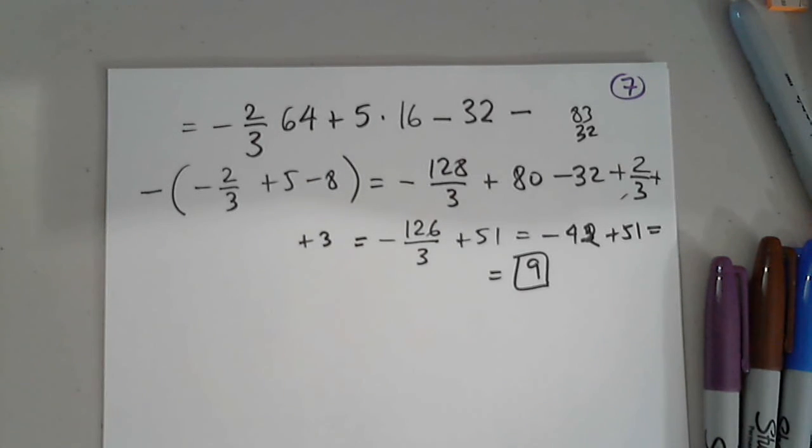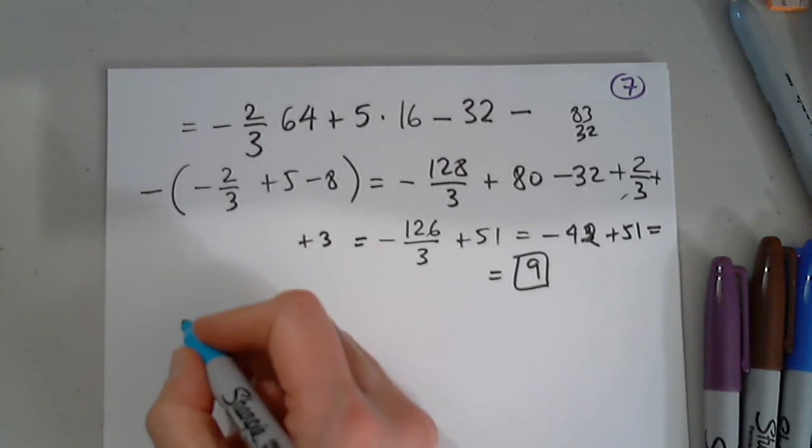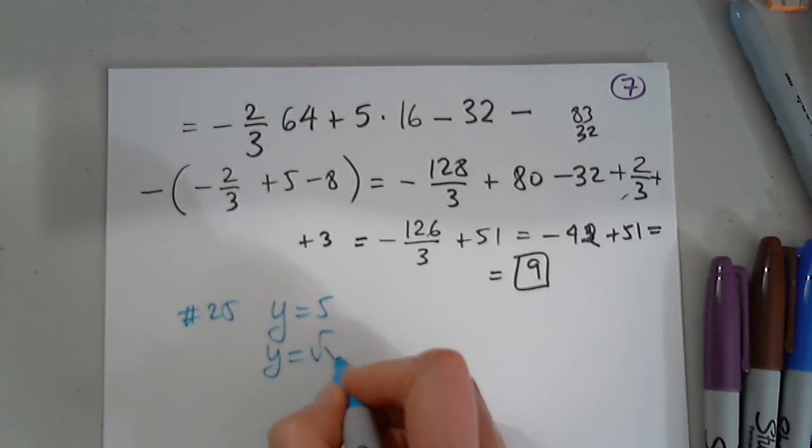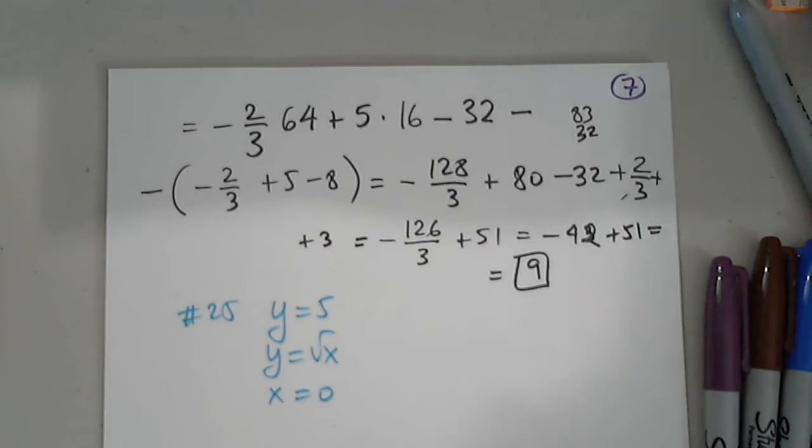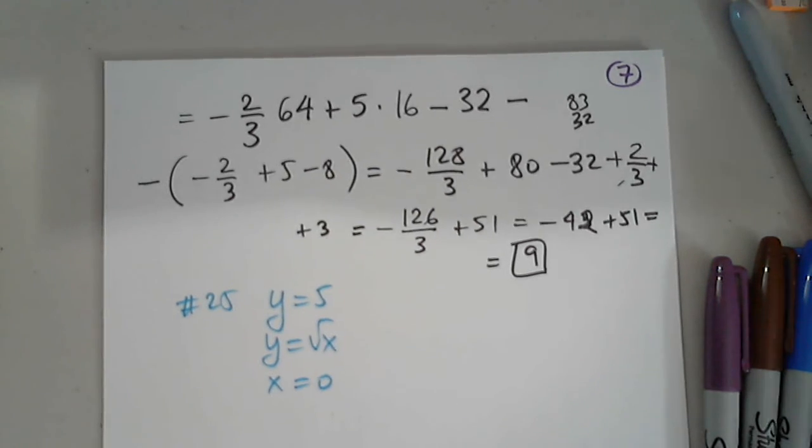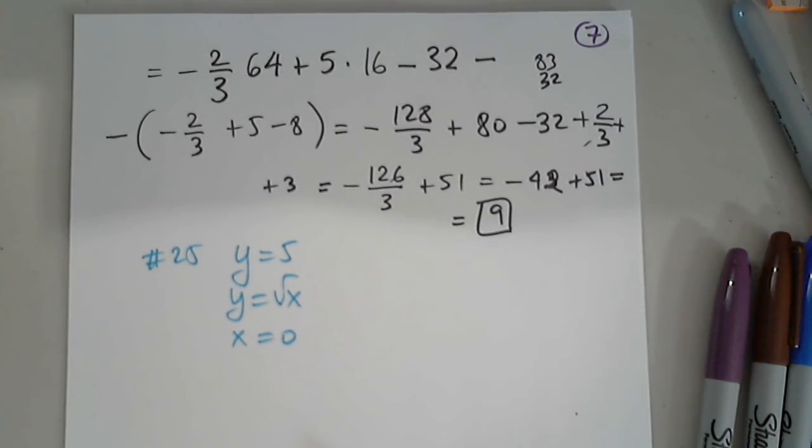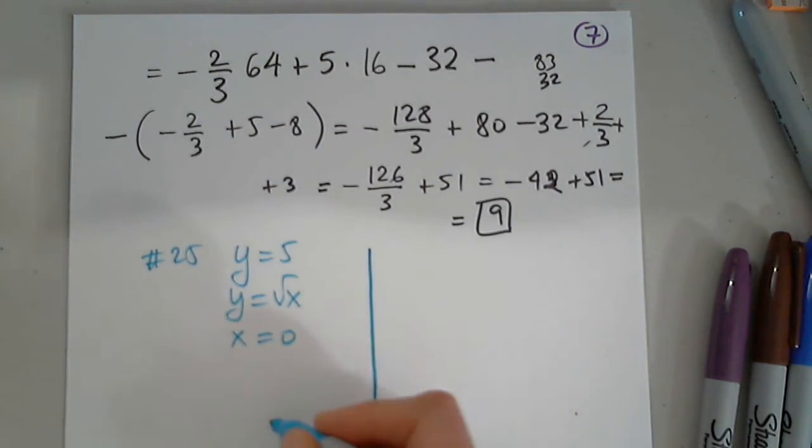You, 25. Okay. 25. Very good. Nice pick. Y equals 5. Y equals the square root of X. And X equals 0. It's a very good warm-up problem. Excellent.